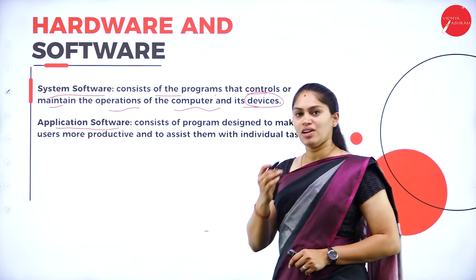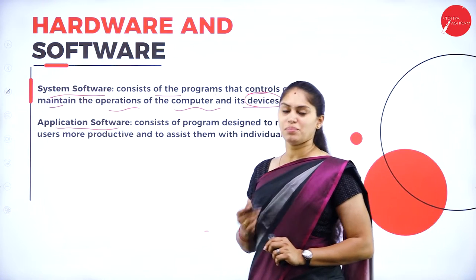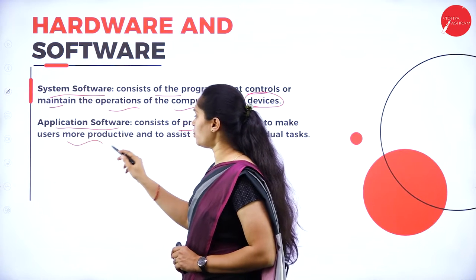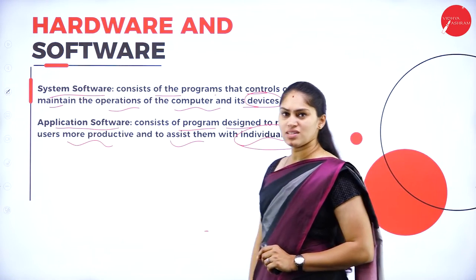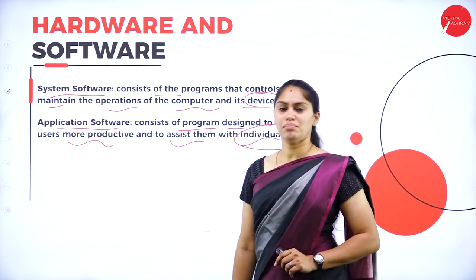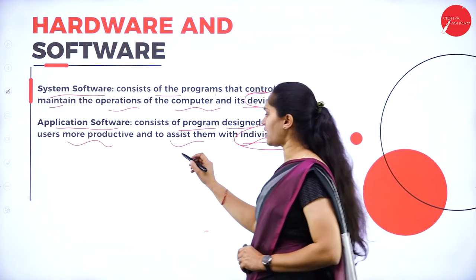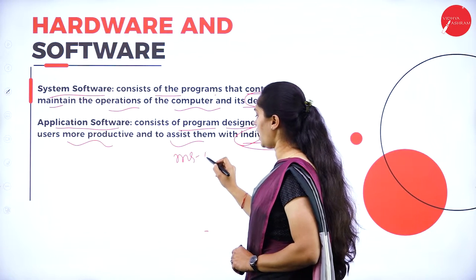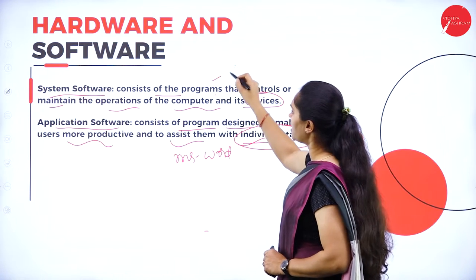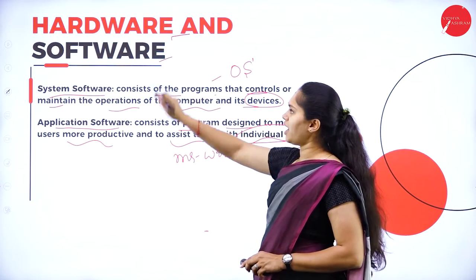Application software consists of programs designed for a particular purpose to make the user more productive. For example, paint software is meant for painting — you can't do video editing with it. MS Word, MS Office, Paint, and Tally are examples of application software. Operating systems like Android or iOS are examples of system software. These are the basic terminologies for hardware and software.